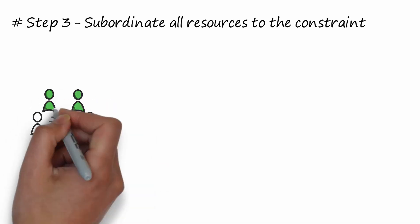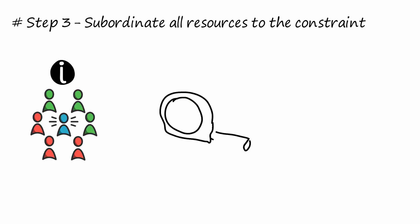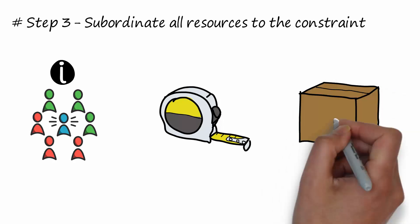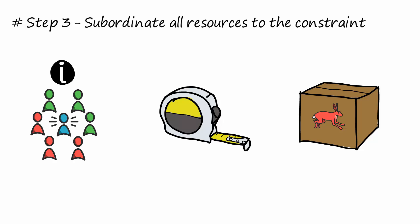Step 3: Subordinate all resources to the constraint. We must all be informed of the importance of the constraint. The performance of the constraint must be measured well. All upstream product inventory should be brought to the constraint as quickly as possible. The SMED should be done at the constraint in order to allow to reduce the processing batches and increase the flow speed.